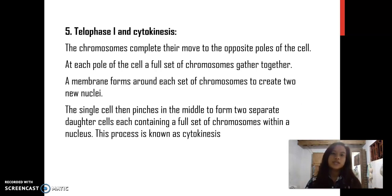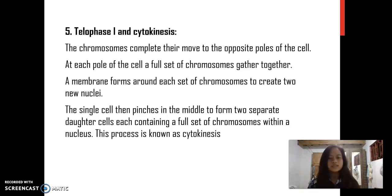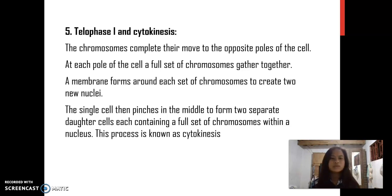Telophase I and cytokinesis: The chromosomes complete their move to the opposite poles of the cell. At each pole, a full set of chromosomes gathers together. A membrane forms around each set of chromosomes to create two nuclei. The single cell then pinches in the middle to form two separate daughter cells, each containing a full set of chromosomes within a nucleus. This process is known as cytokinesis.